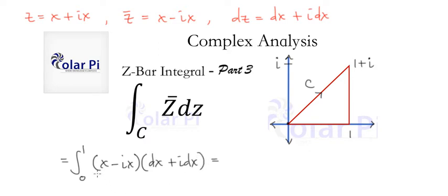Now, from here, factoring out an x, and from here, factoring out a dx, we can write what we have as follows: 0 to 1 of (1 minus i) times x, and then times (1 plus i) times dx.